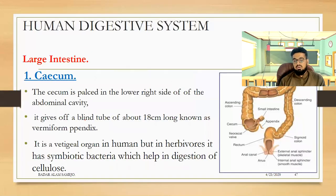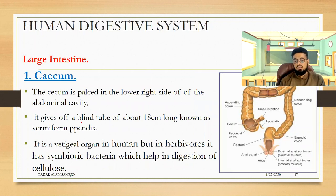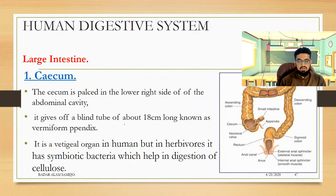The cecum is on the lower side of the small intestine and gives up a small finger-like projection of about 18 cm, which is called the vermiform appendix.